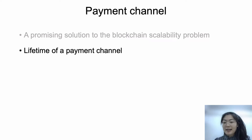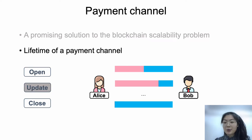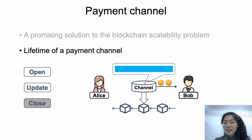There are three phases during the lifetime of a payment channel. Firstly, two users open a channel by securing on-chain deposits to an address controlled by both users. The escrowed fund is the user's initial balance in the channel. Then the two users could perform payments off the blockchain. Each payment changes the balance allocation within the channel and only needs to be approved by the two users. Finally, either user could initiate the channel closing and submit the latest channel state to the blockchain, and the blockchain returns the channel balances to users. Only the channel opening and closing procedures need interactions with the blockchain, and payments are performed off the chain.